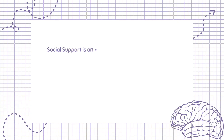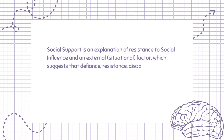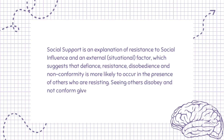Social support is an explanation of resistance to social influence and an external, situational factor, which suggests that defiance, resistance, disobedience and non-conformity is more likely to occur in the presence of others who are resisting. Seeing others disobey and not conform gives observers confidence to do the same.